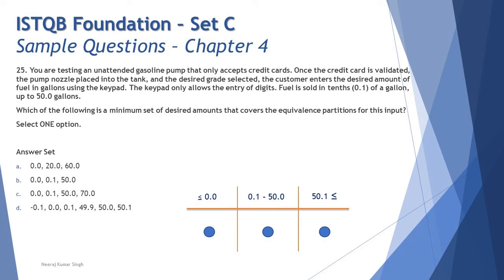Coming to D: minus 0.1 covers the first range, 0.0 is again first range, 49.9 is second, 50.0 is second, and 50.1 is third. We're taking two values from the first and second ranges but still covering all three partitions, which is not correct.